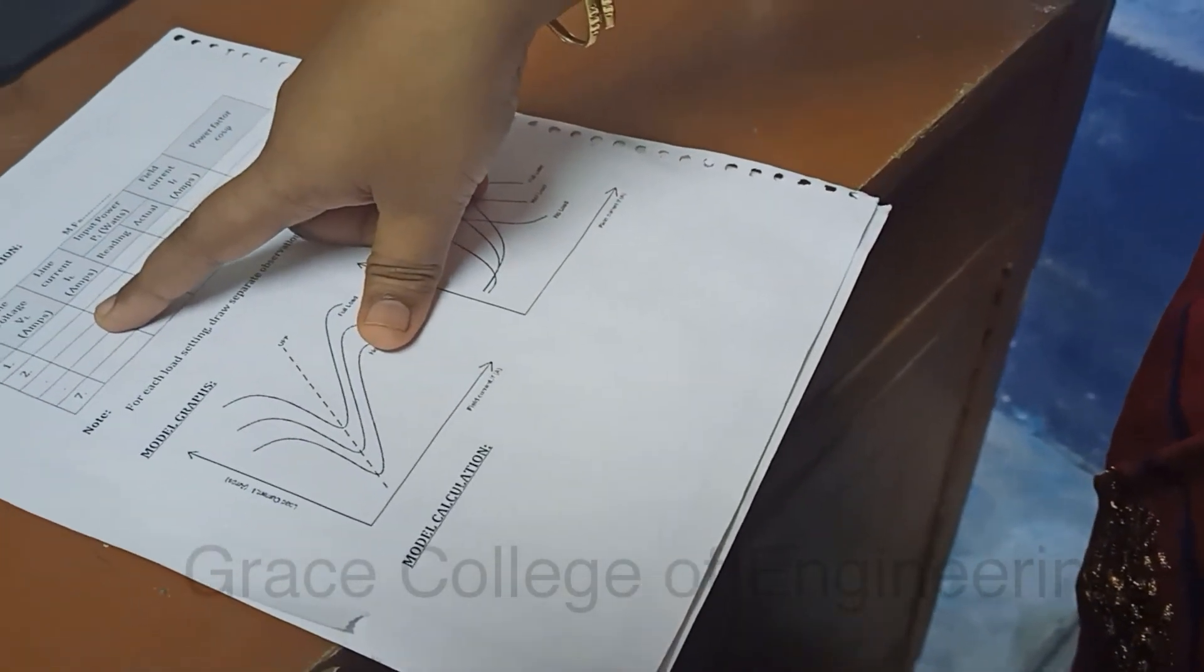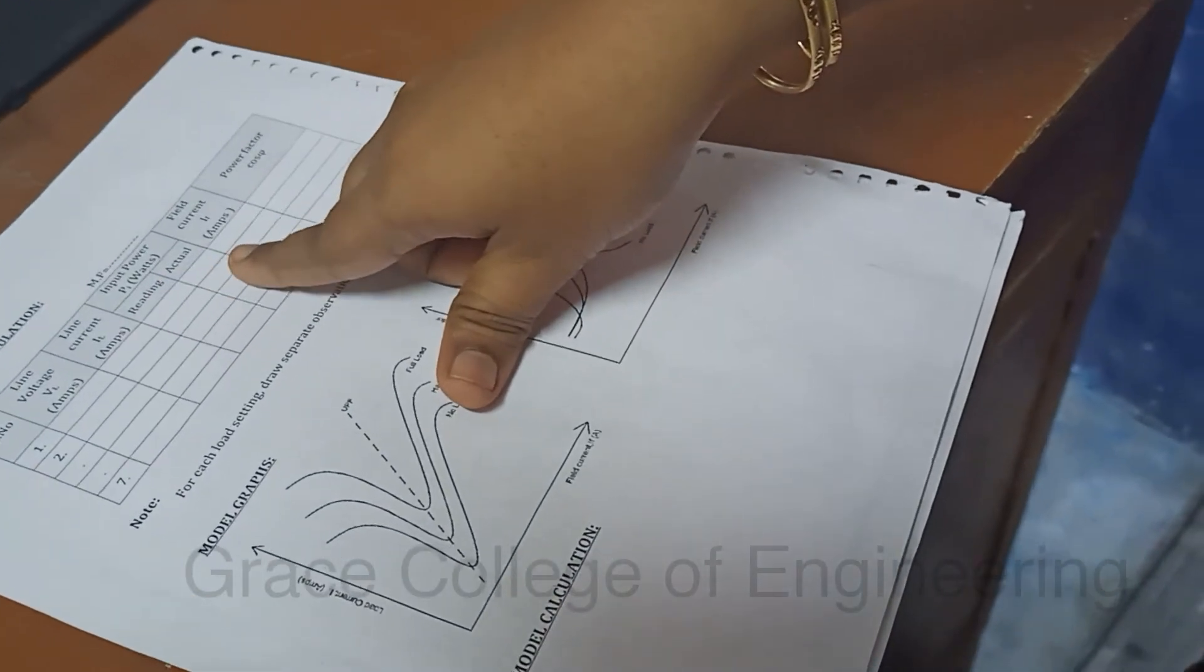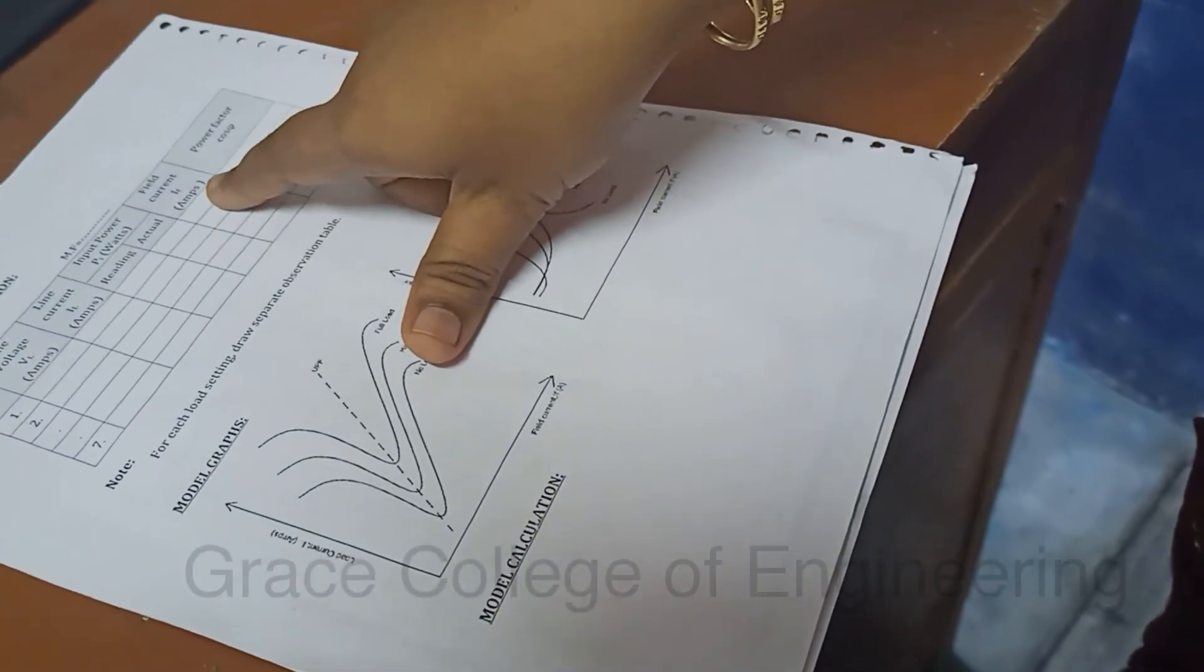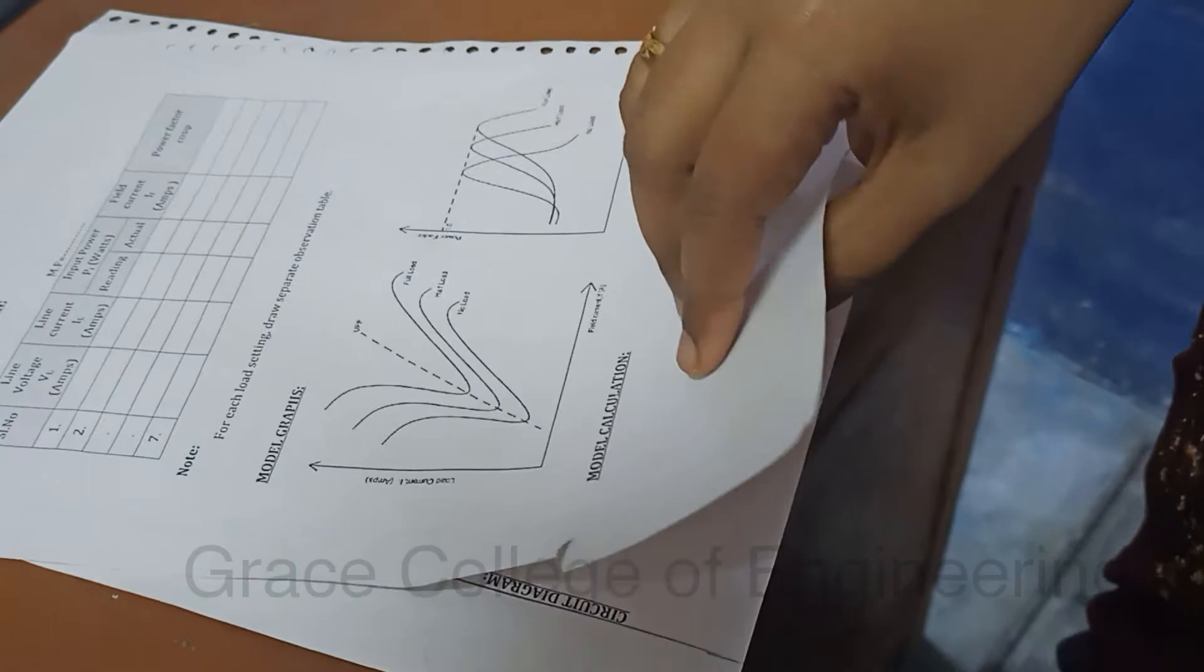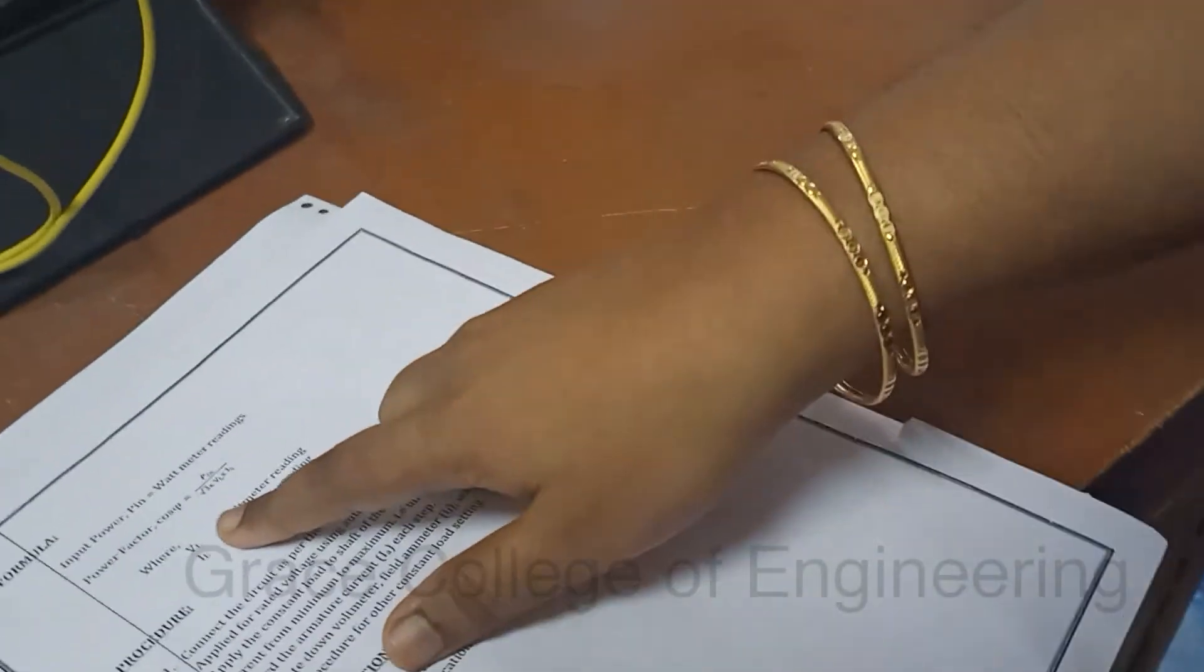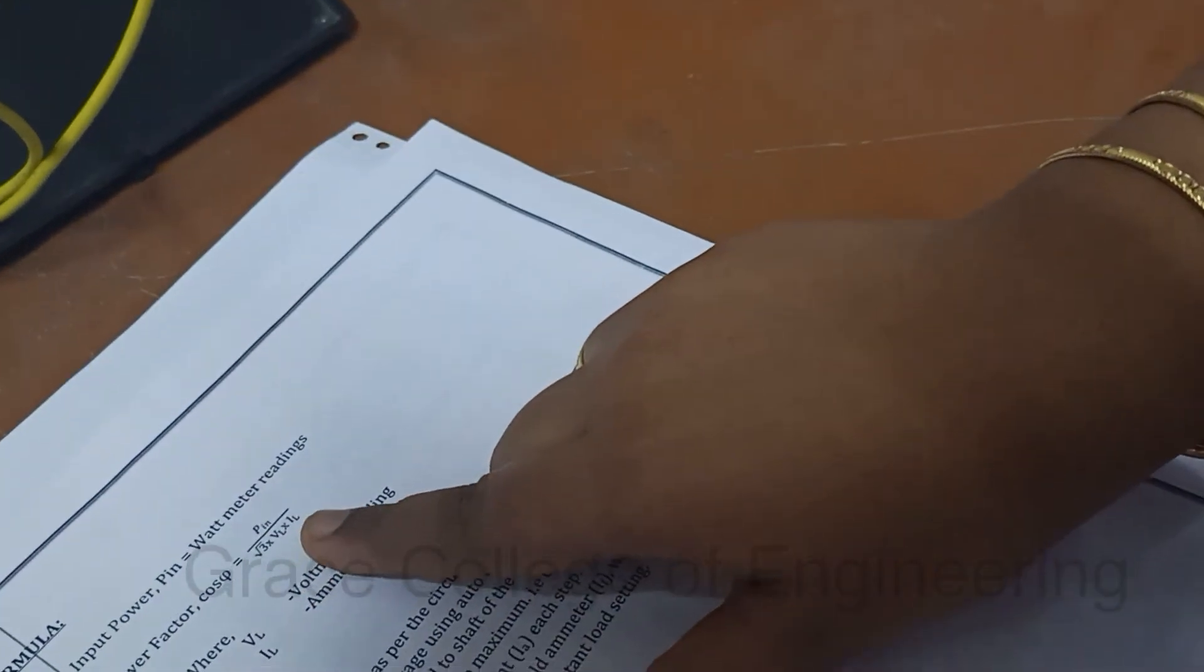The tabulation will have the line voltage, line current, two power watt readings, and field current. By using this formula we want to calculate the power factor. The power factor value is cos phi equals P_in divided by root 3 V_L I_L.